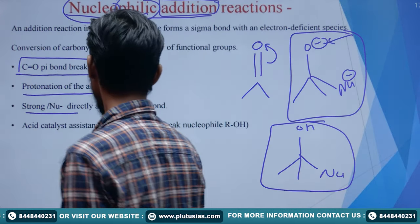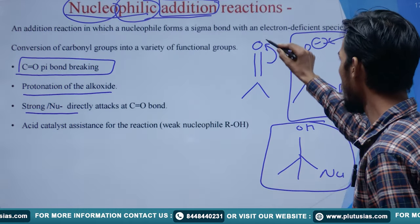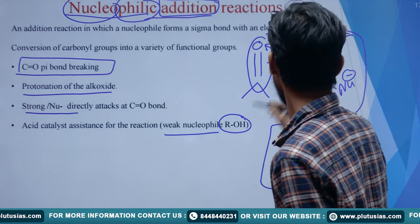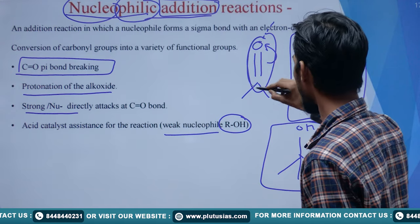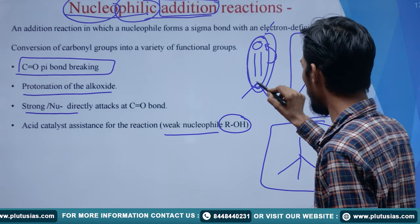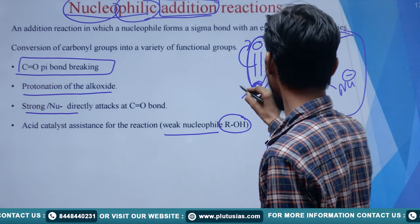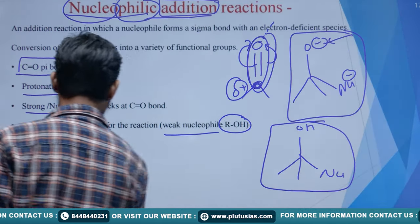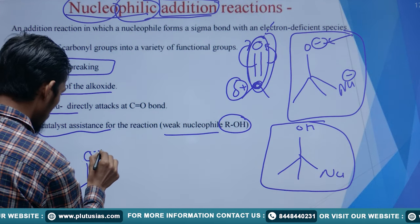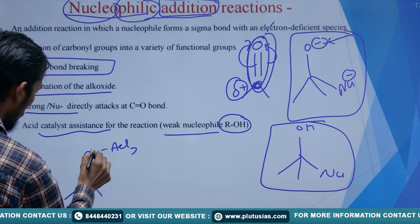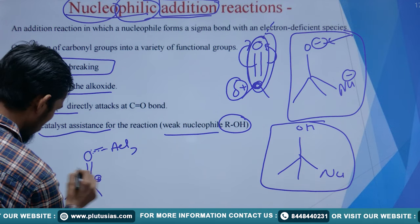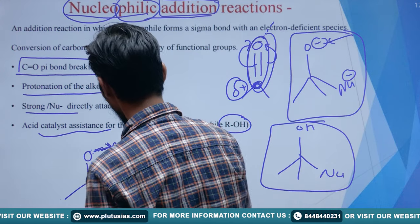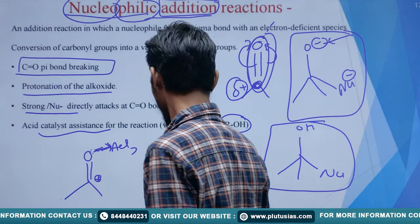If we use a strong nucleophile such as KOH, it can directly attack the C=O. If we are using a weak nucleophile such as ROH, we need the assistance of an acid catalyst. The acid catalyst activates the carbonyl by coordinating with oxygen — oxygen donates electrons to something like AlCl3 — generating a partial positive charge at the carbon center.